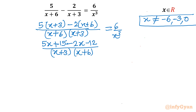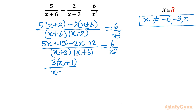The right hand side is also 6 over x³. Now what is left: 5x minus 2x gives 3x, and 15 minus 12 gives 3. So I can take 3 common, giving 3(x+1), divided by (x+3)(x+6). And the right hand side is 6 over x³.